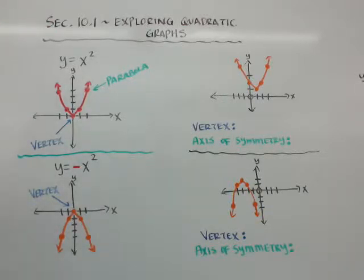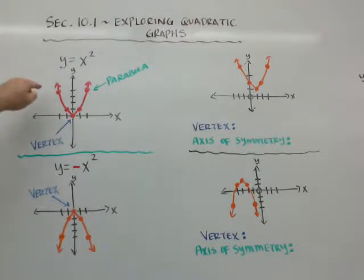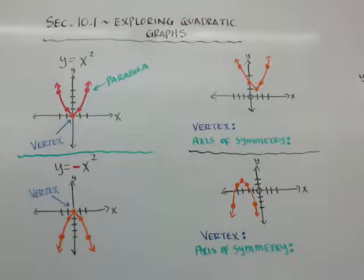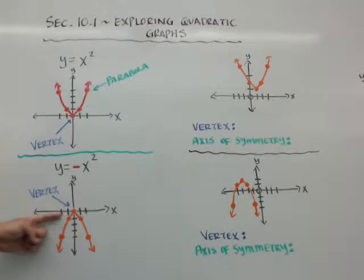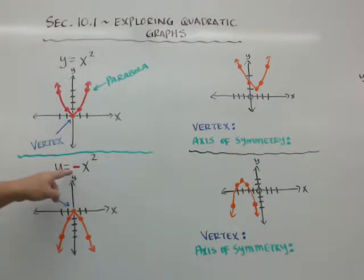First thing is quadratic graphs. If you remember, quadratic is when it's x squared — the term is squared, the highest degree is 2. So if I have y equals x squared, when you graph it you're going to get a basic parabola. It's a u-shape — not really a v, more of a u. It's a parabola, and the bottom point is always called the vertex, or in some cases the top point is called the vertex.